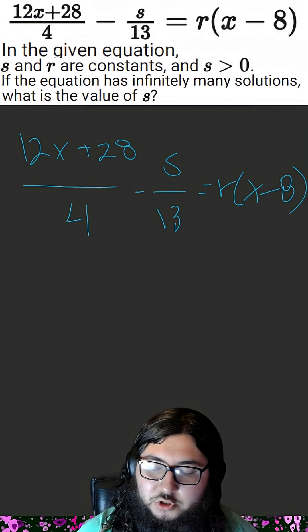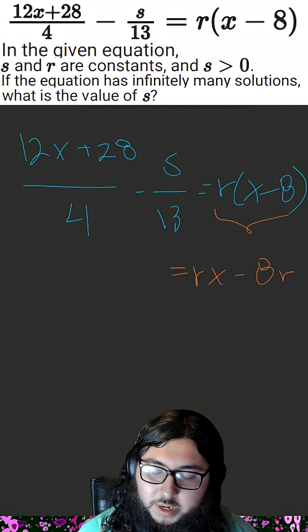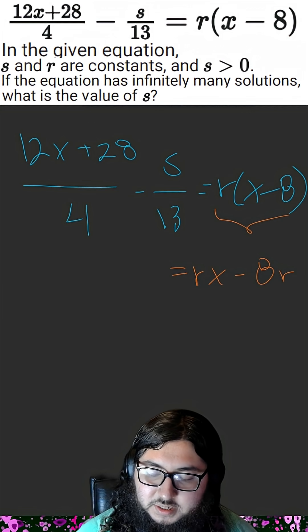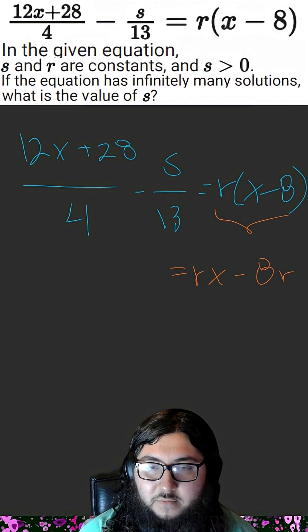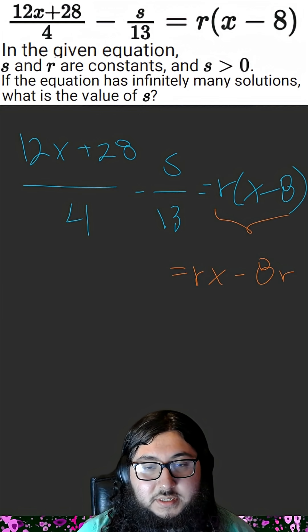First step is to distribute this r to x minus 8. We want the left side to parallel the right-hand side, where rx is some constant times a variable x, and minus 8r is just another constant because r itself is a constant.